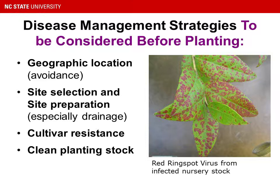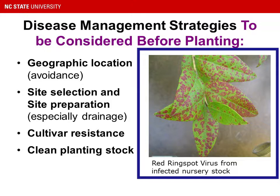If you look at the image on the right, this is red ring spot virus from infected nursery stock. This is a disease that will be there for the life of the planting if you bring it in on the infected nursery material. This is one of the things that really needs to be considered before you plant or before you buy plants.